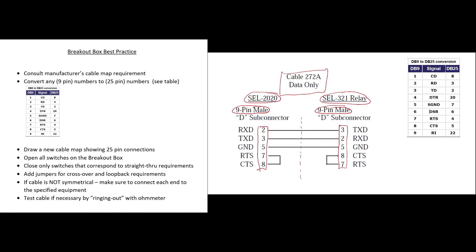Starting with 9-pin 2: pin 2 converts to 25-pin 3, so you put 3 there. Pin 3 converts to 25-pin 2. Pin 5 converts to 25-pin 7. Then we have a 7-8 loopback on the 9-pin side, which is equal to pins 4 and 5 in the 25-pin world — so you'll have a loopback inside the breakout box for pins 4 and 5. On the other end: pin 3 equals 25-pin 2, pin 2 equals 25-pin 3, pin 5 equals 25-pin 7, and the 7-8 loopback again corresponds to pins 4 and 5 in the breakout box.